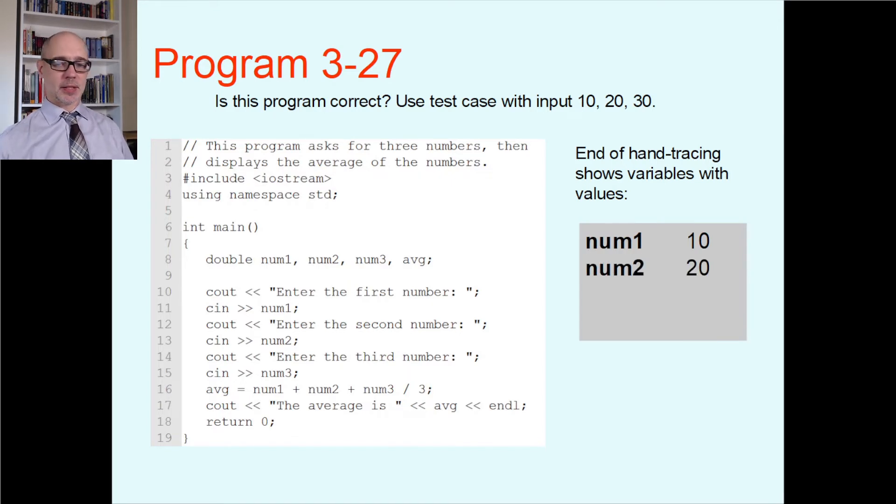You get to line 14. Line 14 happens. You prompt the user, please enter a third number. User types in a number 30, and we can see that's being sent into num3. Great. Now we're on line 16. The right-hand side of the equal happens. We do num1 plus num2 plus num3 divided by 3, and the result of that goes into AVG. What is that? Well, it's 40.